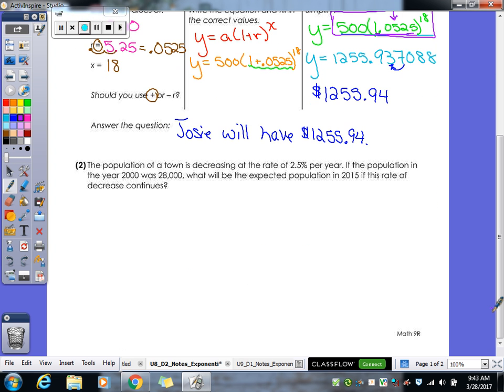Alright, let's take a look at our next problem. So we have the population of a town is decreasing at a rate of 2.5% per year. If the population in the year 2000 was 28,000, what will be the expected population in 2015 if this rate of decrease continues?